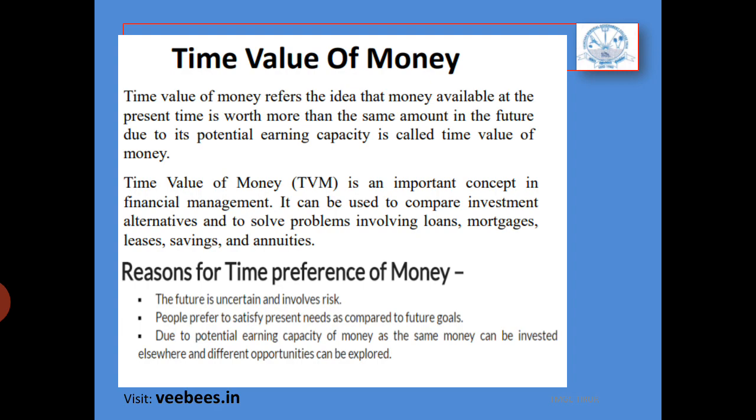Here are some justifications. If the future is uncertain, then we should be able to consume at the current time, but we should be able to receive the amount based on earning capacity. In all these cases, we prefer the current amount rather than the future amount.